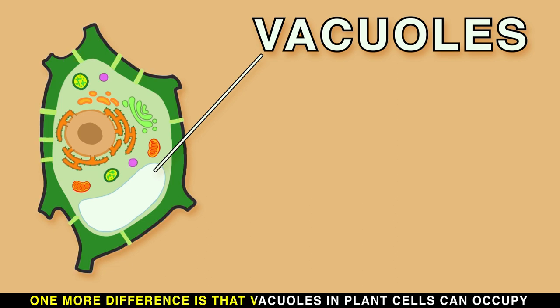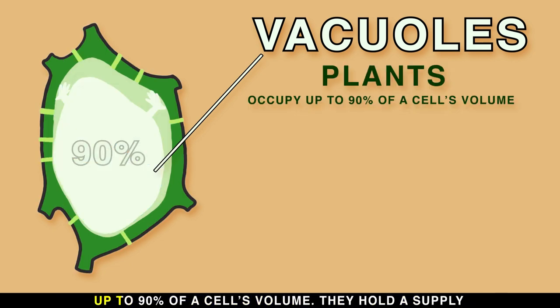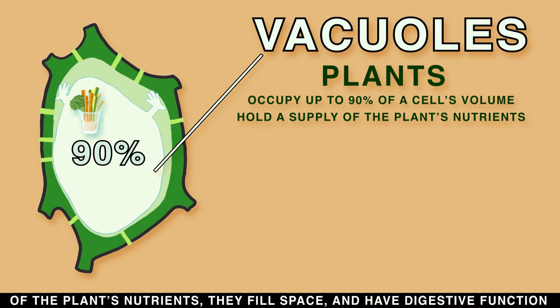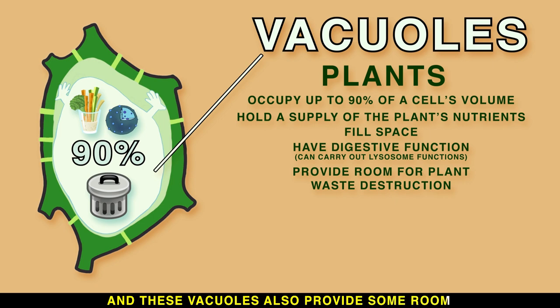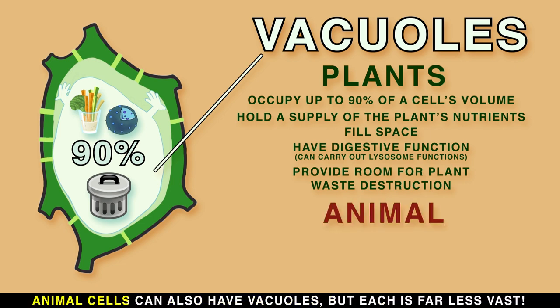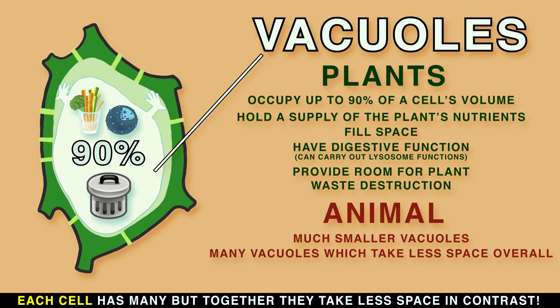One more difference is that vacuoles in plant cells can occupy up to 90% of a cell's volume. They hold a supply of the plant's nutrients, fill space, and have a digestive function. These vacuoles also provide some room for plant waste destruction. Animal cells can also have vacuoles, but each is far less vast — each cell has many, but together they take less space.